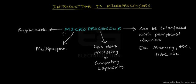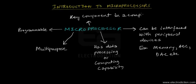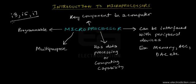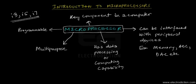From this, we can understand that a microprocessor is basically a key component in a computer. Present-day computers employ microprocessors from Intel — for example, earlier we used the Pentium 3, Pentium 4, and now we basically use the i3, i5, i7 and all such series of processors, which are actually microprocessors created by Intel.